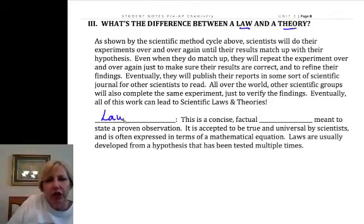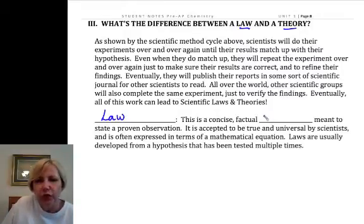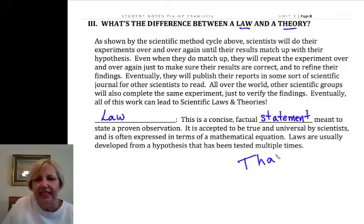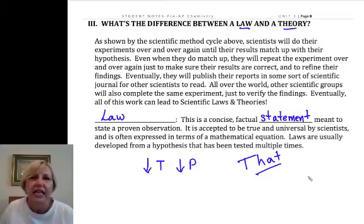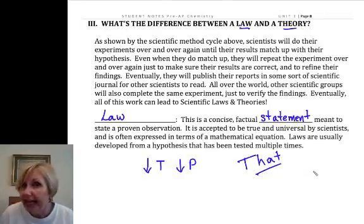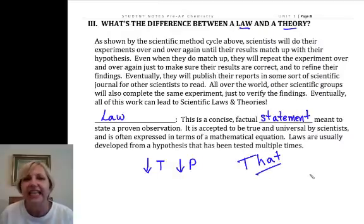The first is a law. A scientific law is a concise, factual statement that says that something happened. Not why, it just says that an event occurs, or that there is a cause and effect that we saw. Like, for example, in the previous video, we saw that as you decrease temperature, you decrease the pressure of a gas. That turns out to be a law.